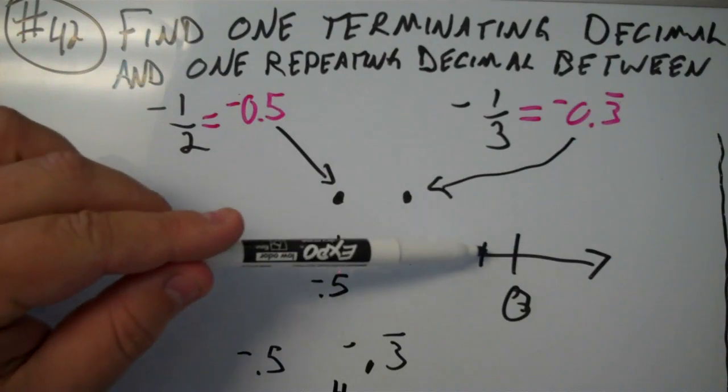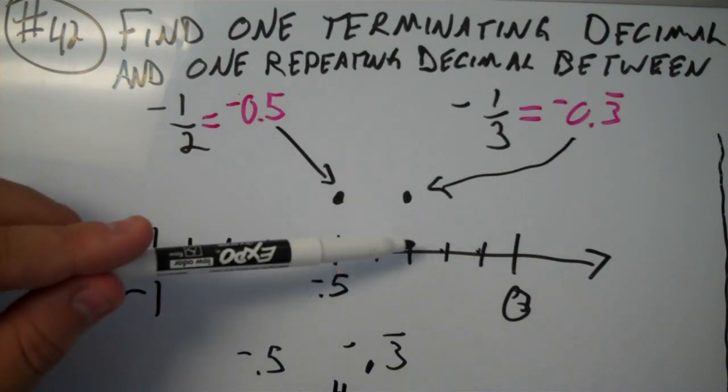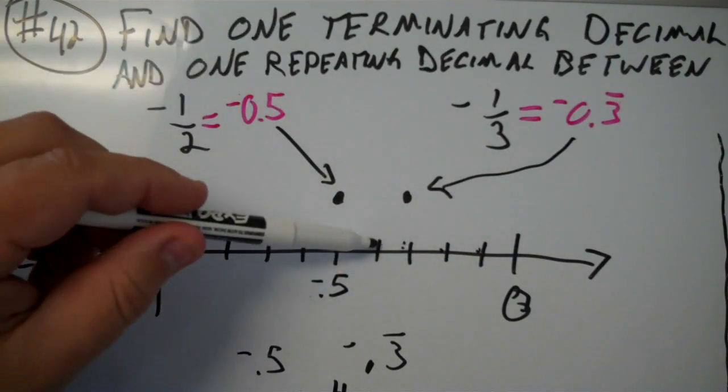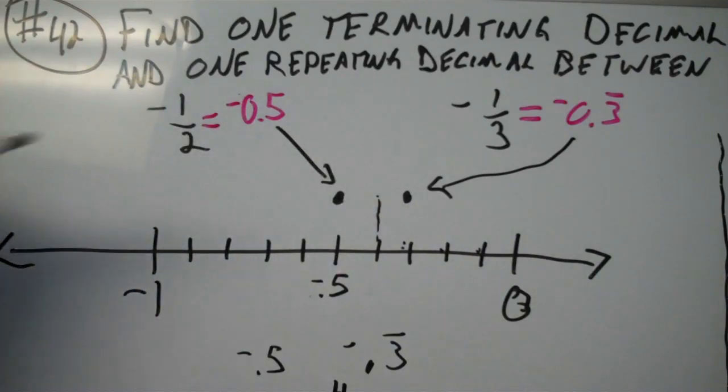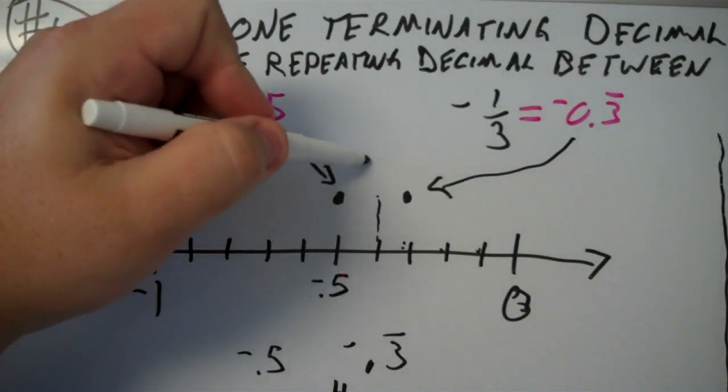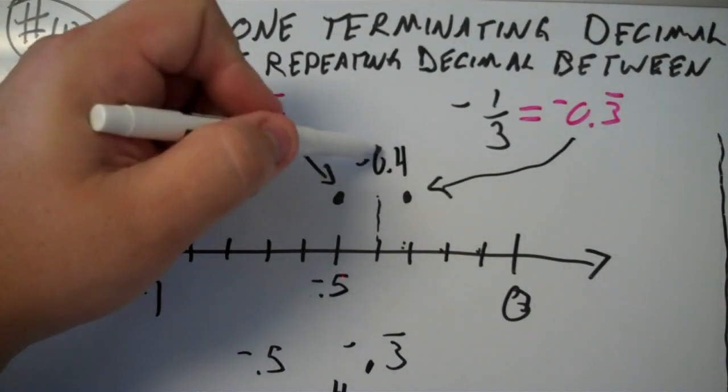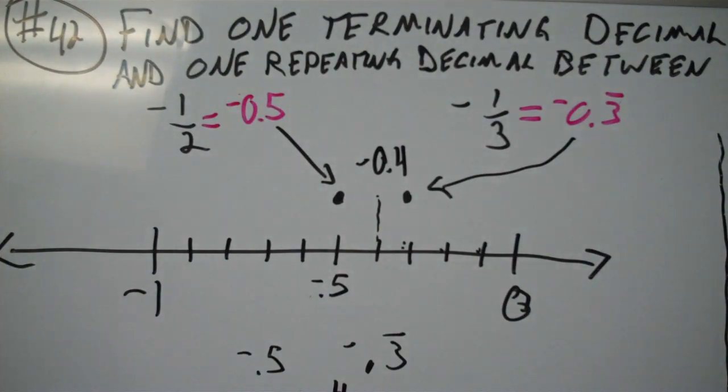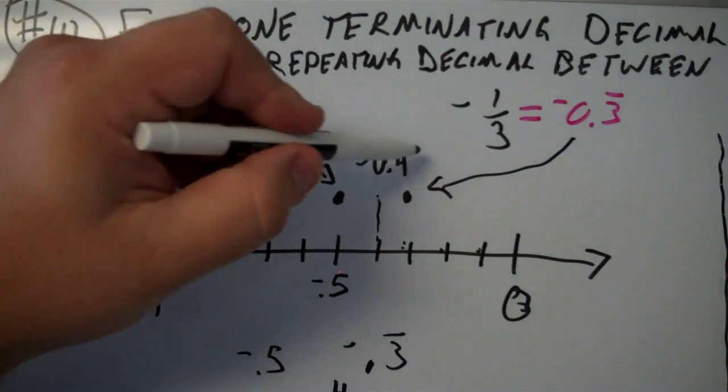And we can see that, in fact, in our number line. Negative 0.1, negative 0.2, 0.3, 0.4 is right here. Obviously, that value is in between both of these. It's not directly in the middle, but it is between them. So we could use negative 0.4 as our terminating decimal. That would be absolutely fine.